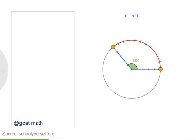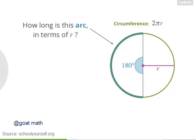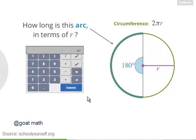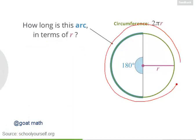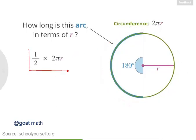Let's see if we can come up with an exact formula for finding the length of an arc. Start with an arc that's exactly half of a circle — this angle is a straight angle, or 180 degrees. How long is this arc in terms of the circle's radius r? If the entire circumference is 2πr, then the length of this arc is half of that: 1/2 times 2πr. The 2s cancel, so the length of this arc is π times r.